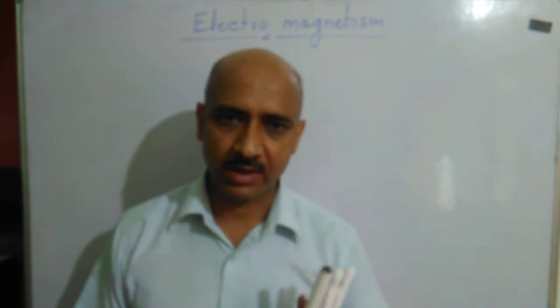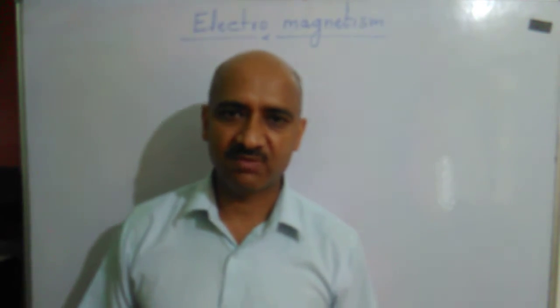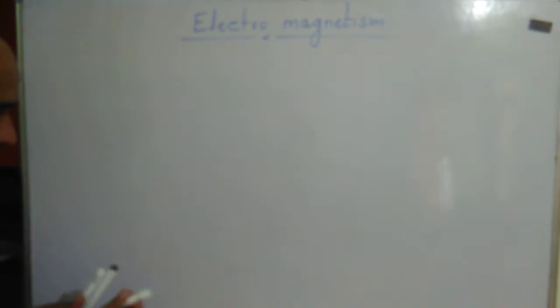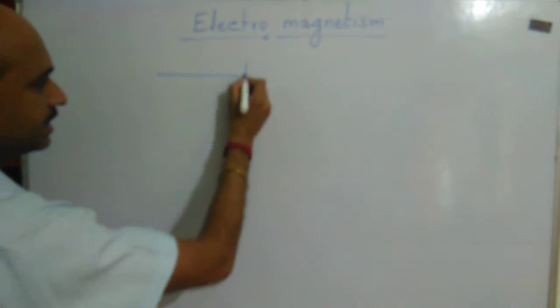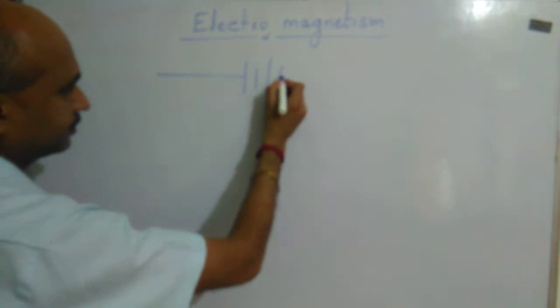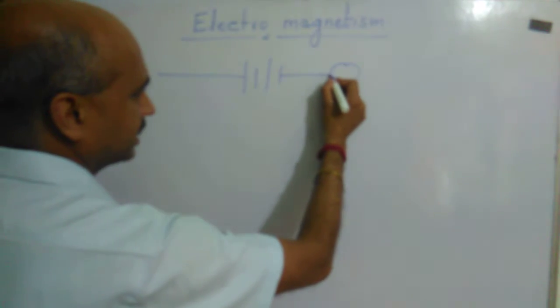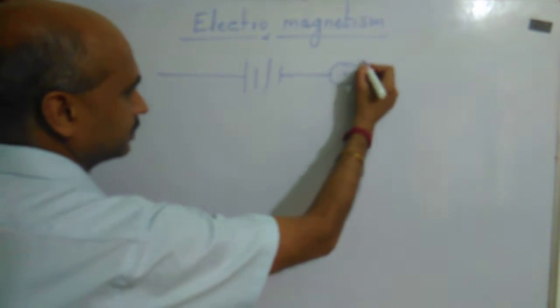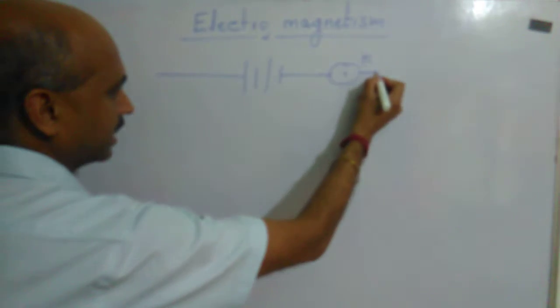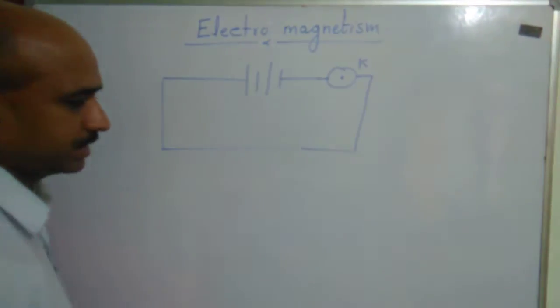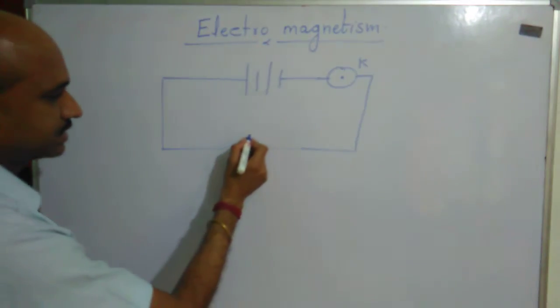Let us see what Oersted did. He took a wire and connected it with a battery — an AC source — and arranged a key to complete the circuit.